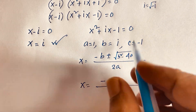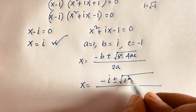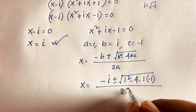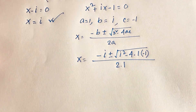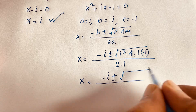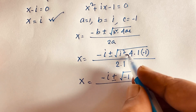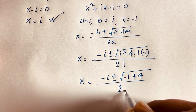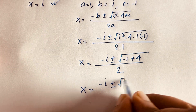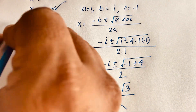Applying the formula: x equals negative i plus or minus square root of i squared minus 4 times 1 times negative 1, over 2 times 1. Since i squared equals negative 1, and minus times minus gives plus, and 4 times 1 equals 4, this becomes: x equals negative i plus or minus square root of 3, all over 2.